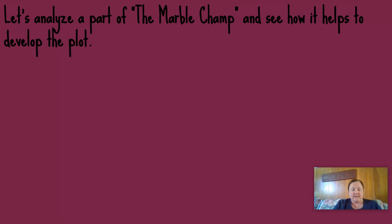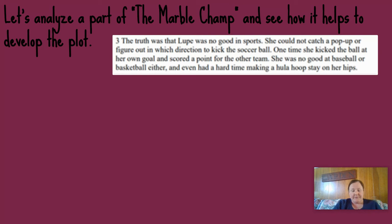Now let's analyze a part of The Marble Champ and see how it helps to develop the plot. We're going to be taking a look at paragraph three, so take some time to get to paragraph three of the story right now. Paragraph three: 'The truth was that Lupe was no good in sports. She could not catch a pop-up or figure out in which direction to kick the soccer ball. One time she kicked the ball at her own goal and scored a point for the other team. She was no good at baseball or basketball either, and even had a hard time making a hula hoop stay on her hips.'